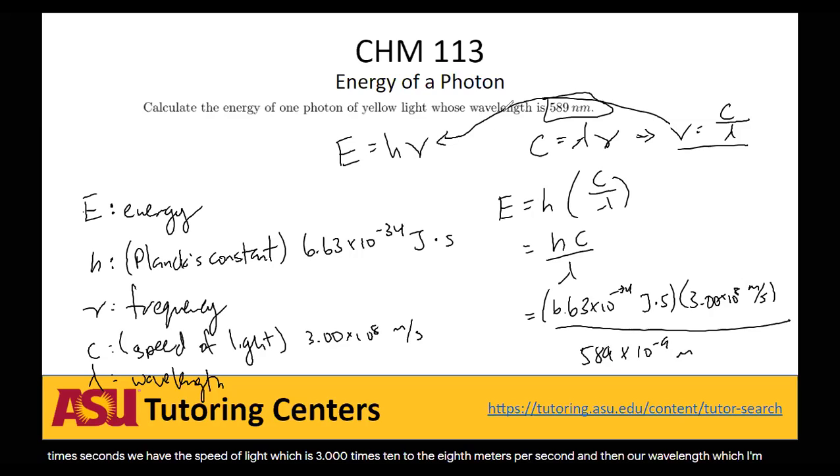We realize that this second cancels out with this one over second. This meter cancels out with this meter in the denominator. So all we're left with is joules, which makes sense because we're looking for energy and joules is a unit of energy.